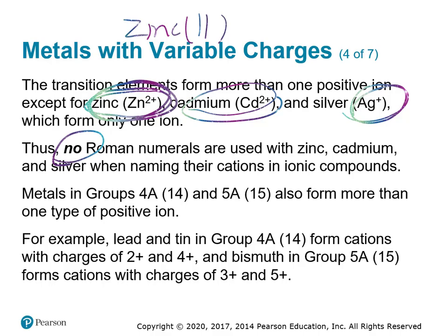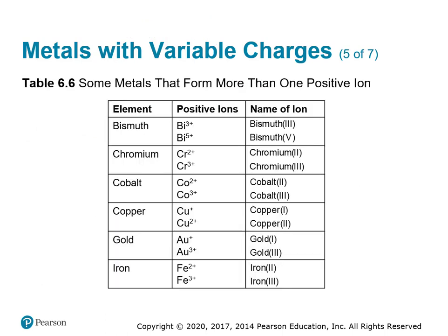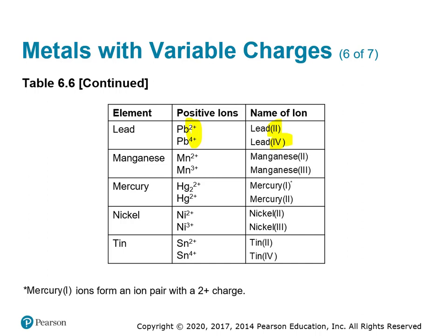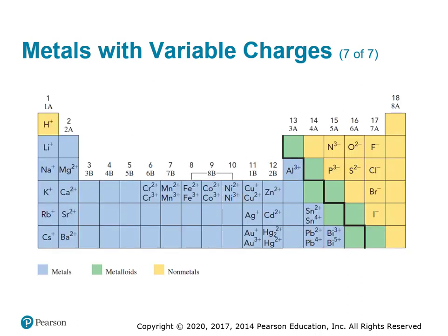Those examples from groups 14 and 15 — or 4A and 5A — can form ions of plus 2 and plus 4 for lead and tin, and bismuth will form plus 3 and plus 5. Here are some of the metals that can form more than one positive ion: bismuth can form plus 3 and plus 5, chromium can form plus 2 and plus 3, cobalt has two, copper has two, gold forms plus 1 and plus 3, iron plus 2 and plus 3, lead 2 and 4, manganese, mercury, nickel, and tin. This also shows us that zinc, cadmium, and silver don't have multiple ions even though they're transition metals.